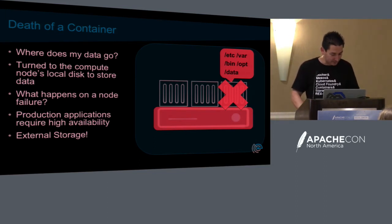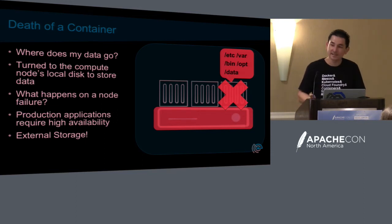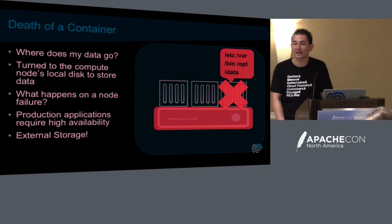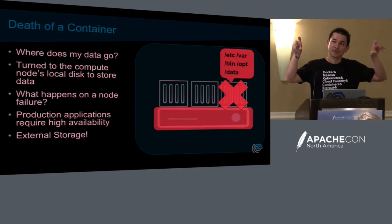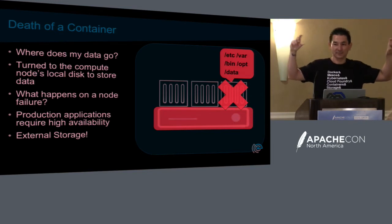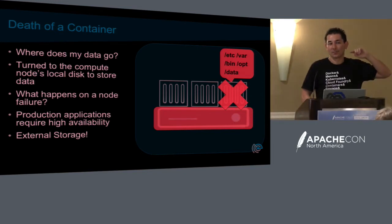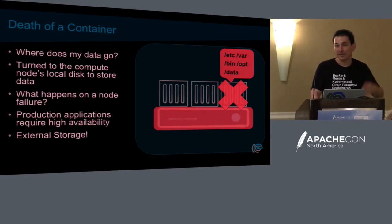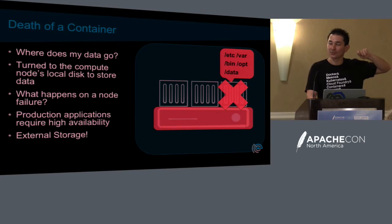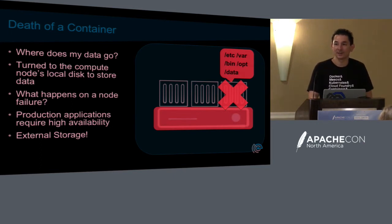ScaleIO and vSAN do the same thing: ScaleIO takes direct-attached disks, contributes them to a global pool, stripes data across that pool. When you provision storage, you provision volumes out of that globally accessible pool. So even though you're using local aggregated disks, because the storage is accessible from every node, it looks like external storage — giving you data mobility across nodes.